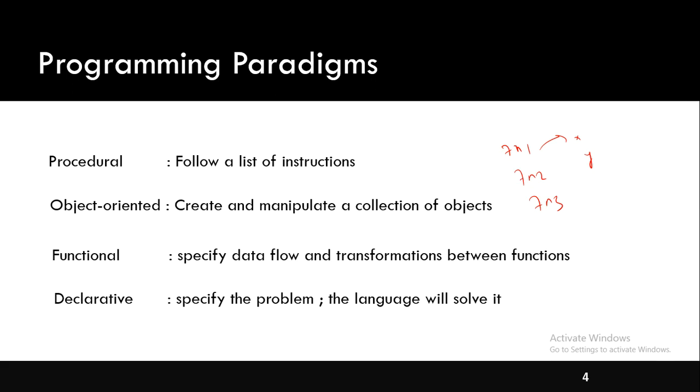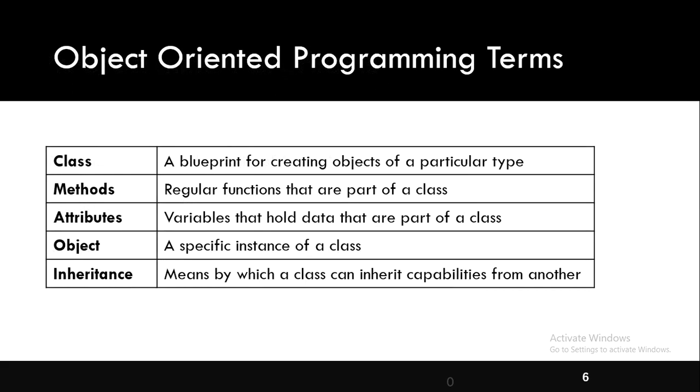Now let us proceed with understanding the concepts of object oriented programming. Before we proceed, let us see what are the terms in object oriented programming. We have class, methods, attributes, object, and inheritance.